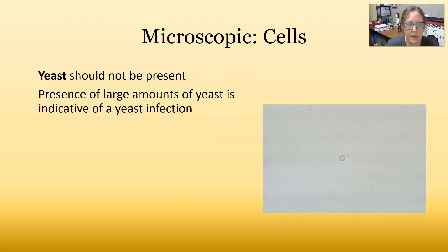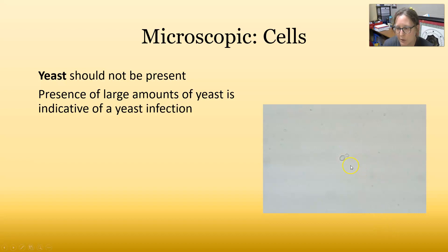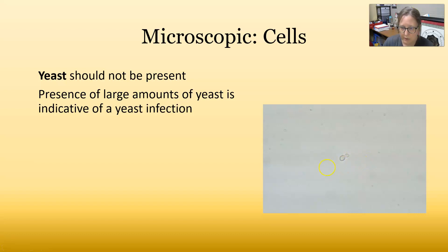This picture represents bacteria — you can see these little dots scattered all over; those are bacteria. Yeast should not be present. The presence of large amounts of yeast, or really any yeast, is indicative of a yeast infection usually coming from the genital tract. You can see they are attached and budding. It can be hard to distinguish yeast from a red cell; it takes a trained eye. One key difference is that yeast bud whereas red cells do not.